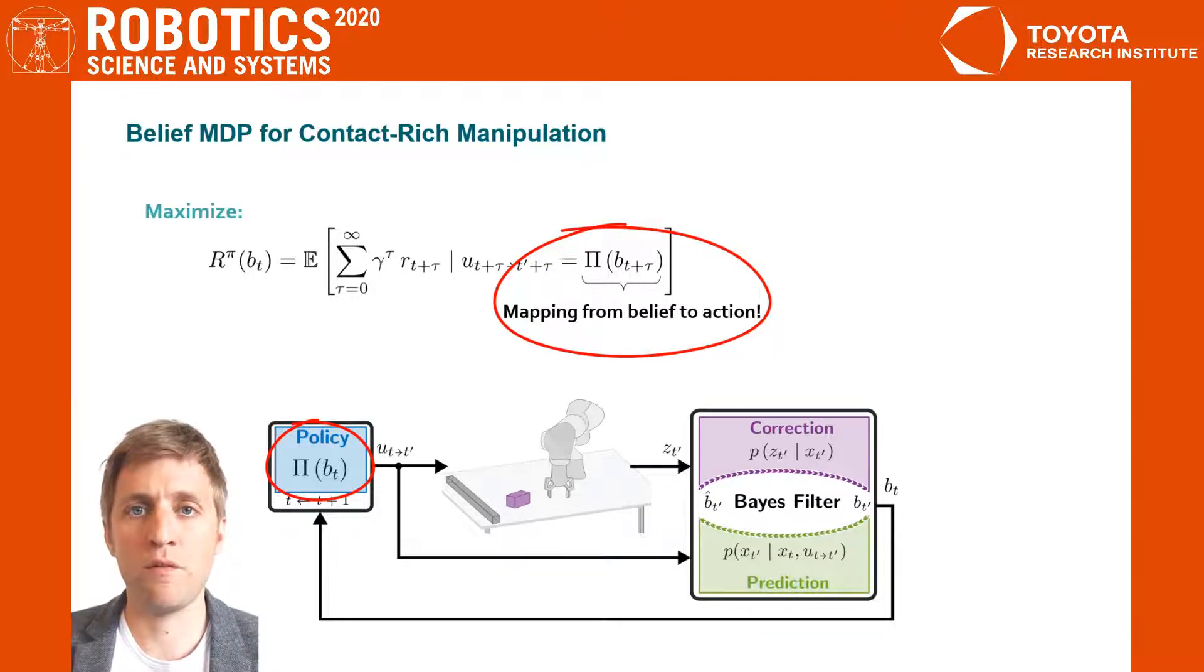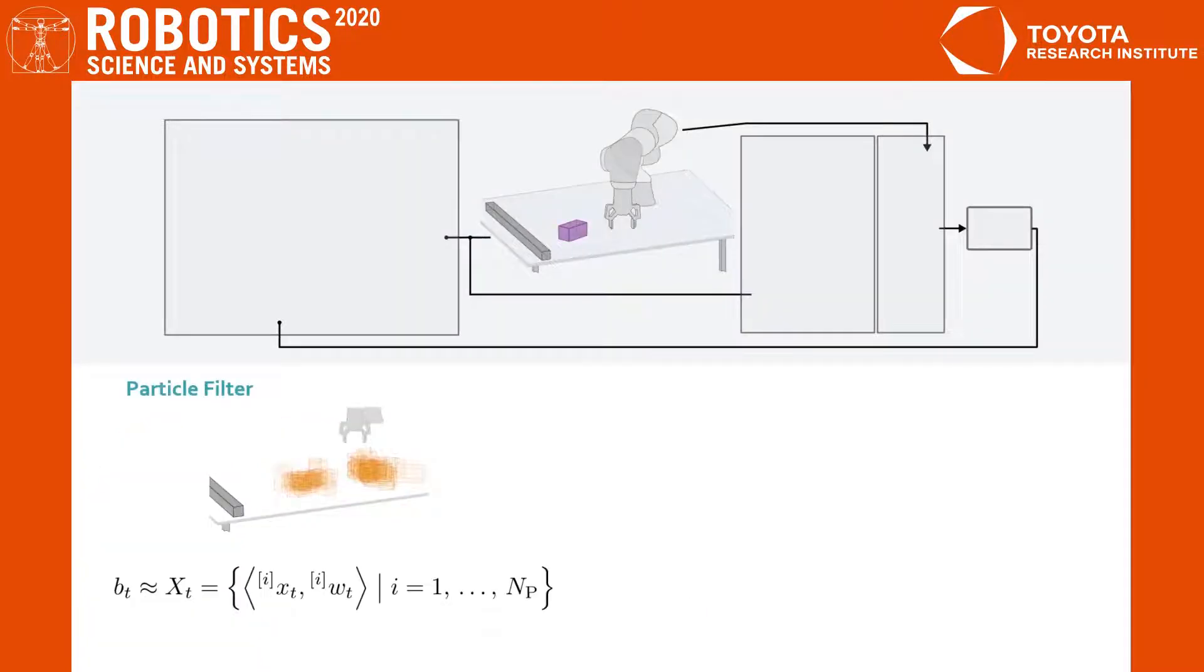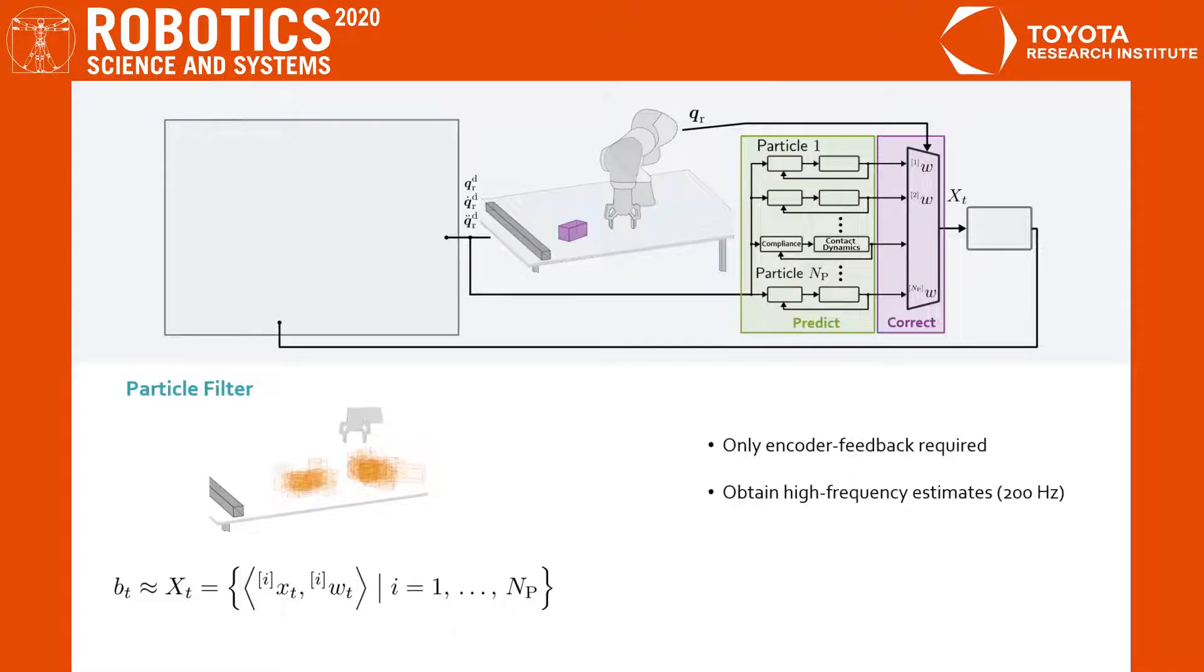In the following, we derive a policy Pi that chooses actions based on the present belief. Due to the strong nonlinearities of contact dynamics and the multimodal belief distributions, we use a particle filter as belief approximation. This filter only relies on joint encoders as feedback and estimates the particle belief at 200 Hz.